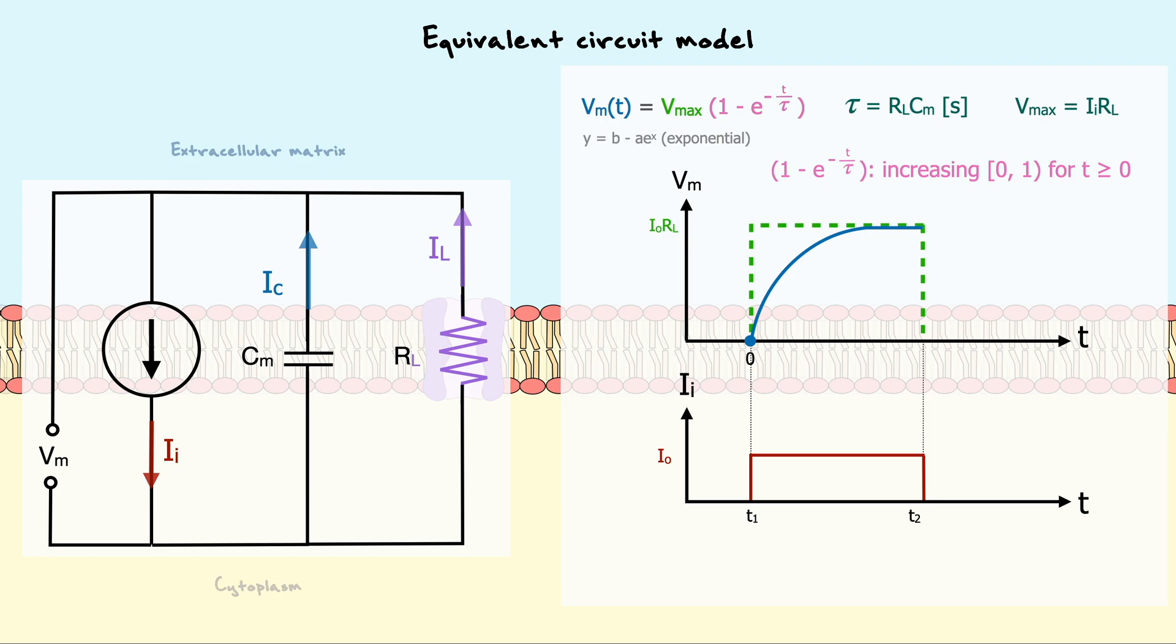As Vm ascends to Vmax, remember that the time constant has units of seconds and at some point the time will be equal to the time constant. When that happens, the value produced by the pink term is around 0.63. In other words, at the value of T equals tau, we say that the membrane potential is 63% of the maximal voltage.